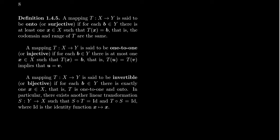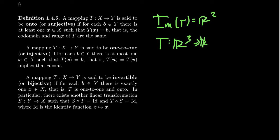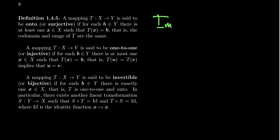We actually saw in our previous example that this can happen. We had a function and showed that the image of the function was actually all of R2, and this was a map from R3 to R2. So that was an example of an onto function — it was surjective because everything was obtainable through this function. A function is onto exactly when its image equals its codomain.